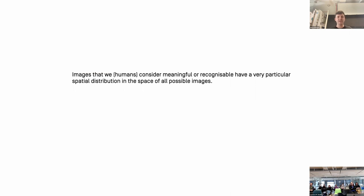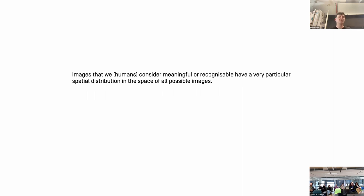The most important thing I want you to learn here is that images which humans consider meaningful form a very particular spatial distribution in the space of all possible images. The space of all possible images of a certain resolution is an incredibly huge space. What we humans perceive as familiar and meaningful takes just a tiny, tiny amount of this enormous space — larger than the number of atoms in our galaxy. Try generating images by choosing random pixel values and see how often you get a meaningful image — basically never; you just get noise.